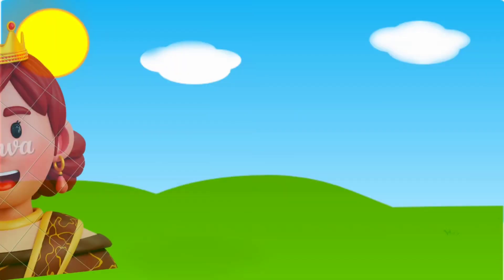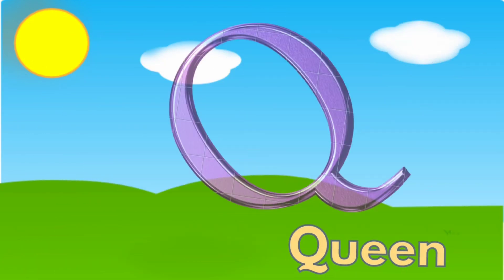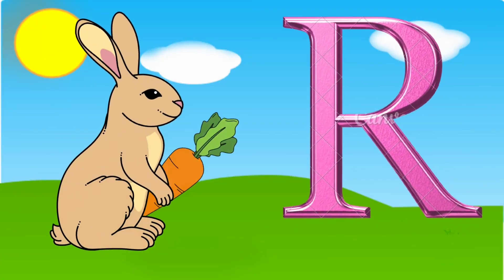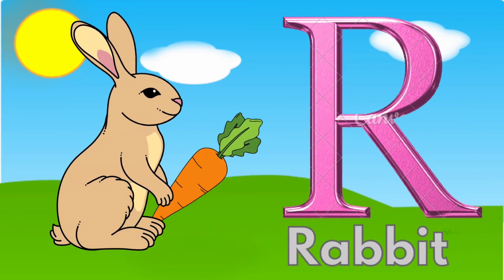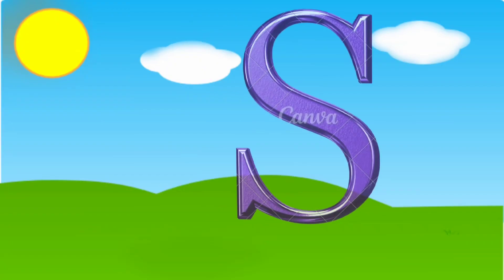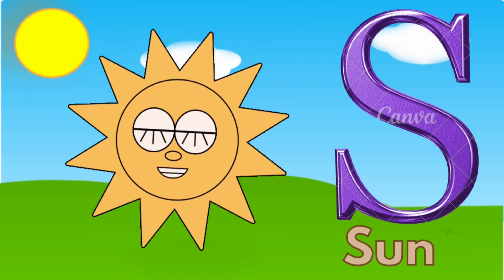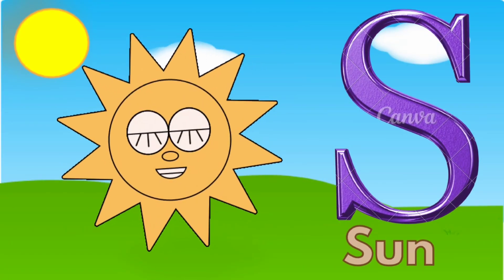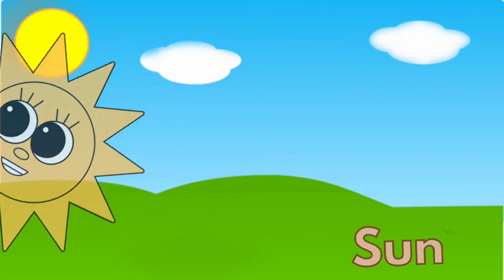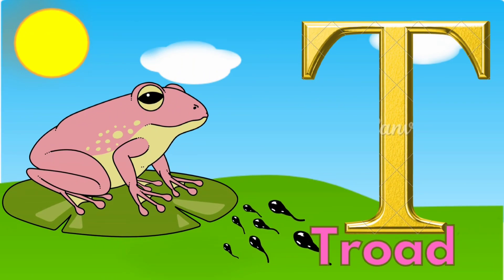Q is for Queen, Q-Q-Queen. R is for Rabbit, R-R-Rabbit. S is for Sun, S-S-Sun. T is for Toad, T-T-Toad.